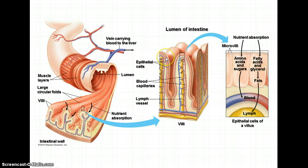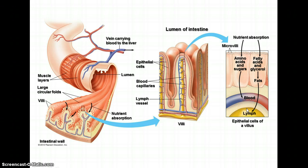In the lumen of the intestine, in the lining of the intestine, we have epithelial cells, blood capillaries, and lymph vessels, all of which are involved in absorbing various compounds. Amino acids and sugars are absorbed into the blood system, while fatty acids and glycerol are absorbed into the lymph system, and they are carried to wherever the nutrients are needed in the body.